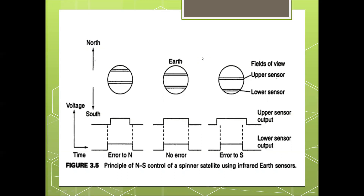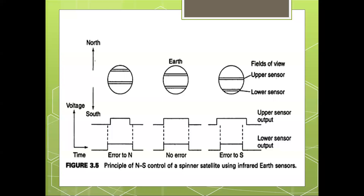Just to recall the summary from the attitude control system: the attitude control of a 3-axis stabilized satellite requires just increasing or decreasing the speed of inertia on the particular wheel location.